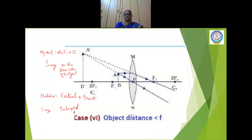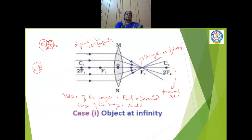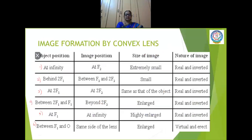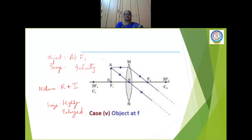These are the six cases of image formation by a convex lens. In all five previous cases, the image is real and inverted. But in the sixth case, when the object is between F and O, the image is formed on the same side of the lens — it is virtual, erect, and enlarged. These are the six ray diagrams for image formation of a convex lens.